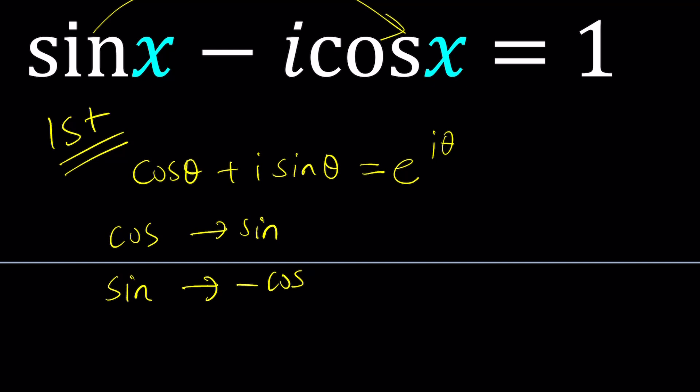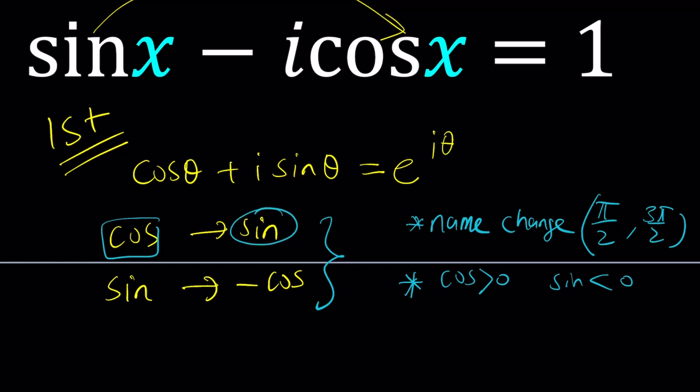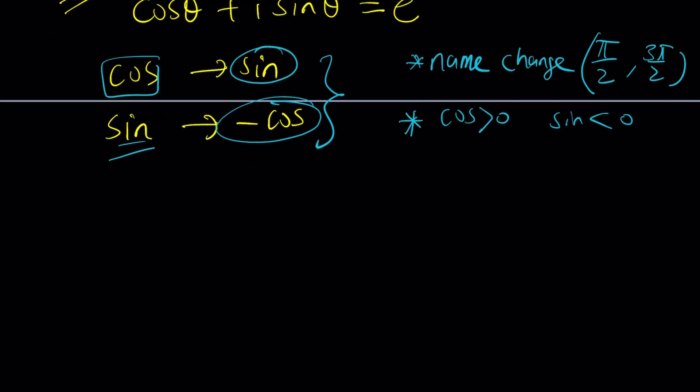We basically need to do two things. One is the name change. And any time there is a name change from sine to cosine or cosine to sine, pi over 2 or 3 pi over 2 is involved. And the second thing is, cosine is positive and sine is negative. Why am I saying cosine is positive? Because cosine turns into a positive sine, so it's considered a positive cosine. And sine turns into a negative cosine, so sine is supposed to be negative in that quadrant. What is the quadrant? It is the fourth quadrant. Because that's where this is achieved. Cosine is positive and sine is negative in the fourth quadrant.